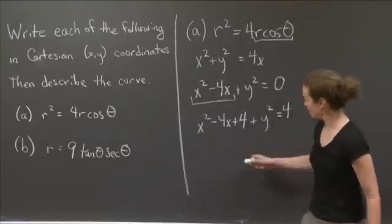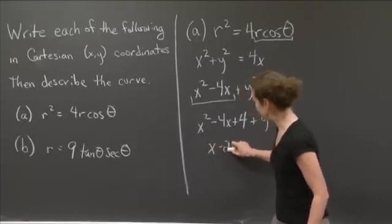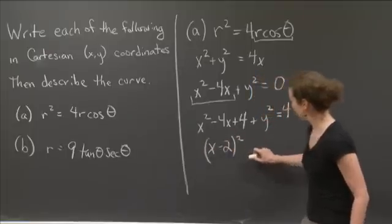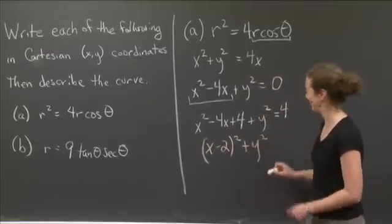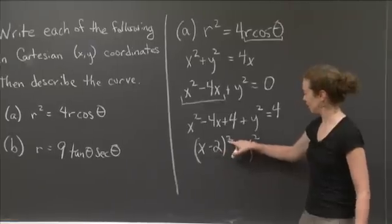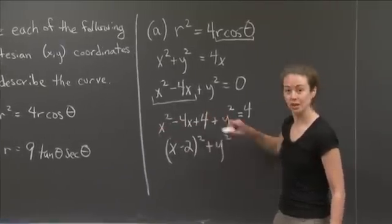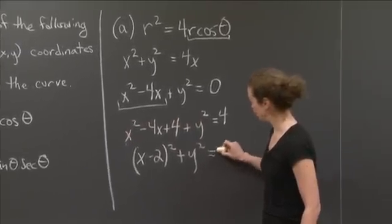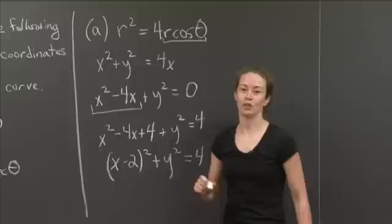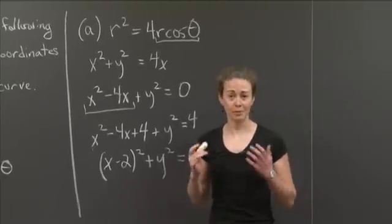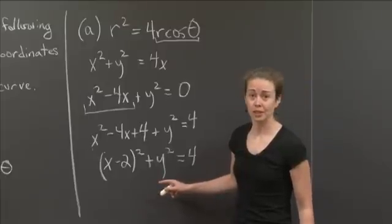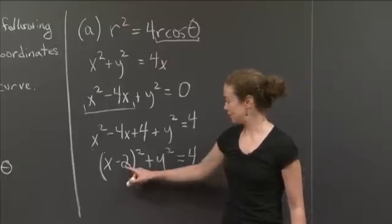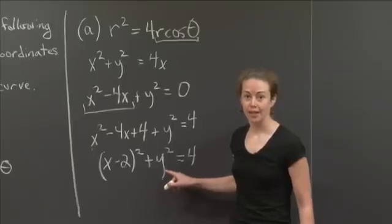So now I have a perfect square. What's this give me? This gives me (x - 2)² + y². So (x - 2)² - that came from these three terms - plus y² equals 4. And now it's a curve we can describe clearly. What curve is this? Well, it's obviously a circle. It's centered at the point (2, 0). And it has radius 2.